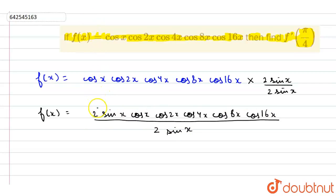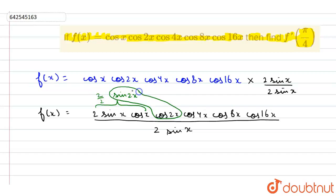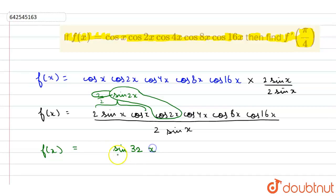As you can see, 2 sin x · cos x becomes sin 2x. If we multiply and divide by 2 again, this becomes sin 4x. Similarly, multiplying by 2 again gives sin 8x, then sin 16x. We get the final result: f(x) = sin(32x) / (2⁵ · sin x).